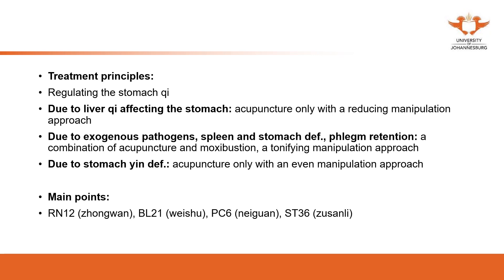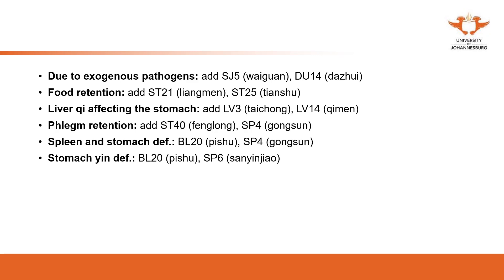The treatment principle is to regulate the stomach qi. Due to liver qi involvement, the treatment principle remains to regulate the stomach qi. The common acupuncture points are CV 12, Bladder 21, Pericardium 6, and Stomach 36. As you can see, the diseases introduced in this category — stomach ache, nausea, and vomiting — share a very similar selection of points: local points, back-shu points, and special points such as Pericardium 6 and Stomach 36, the lower he-sea point of the stomach.